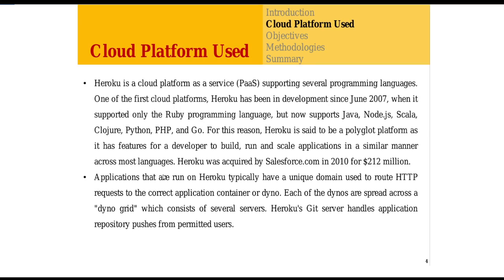Heroku Cloud Platform is a platform as a service model supporting several programming languages. Heroku was developed in June 2007. When it was developed, it only supported Ruby, but now it supports Java, Node.js, Scala, Python, PHP, and Go. For this reason, Heroku is said to be a polyglot platform, as it has features for a developer to build, run, and scale applications in a similar manner across most languages.